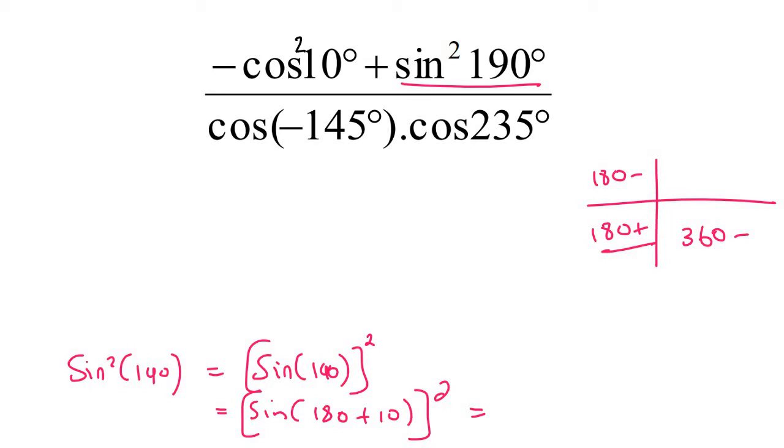And then we know that sin of 180 plus 10, sin is negative in that quadrant. So that just becomes negative sin 10. But then that is squared.